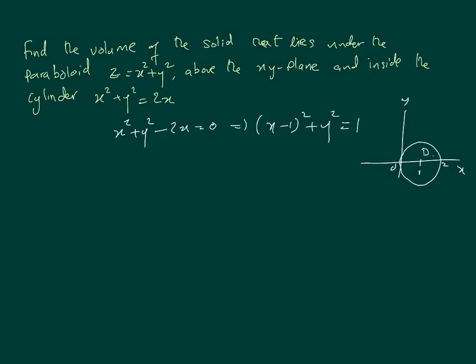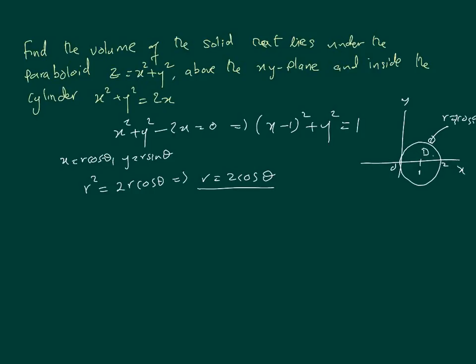To represent this in polar coordinates, we substitute x equals r cosθ and y equals r sinθ. Going back to our original equation x² + y² = 2x, substituting gives r squared equals 2r cosine theta, which implies r equals 2 cosine theta. So that's the boundary of this circle in polar form: r equals 2 cos theta. The radius starts at 0 and goes up to 2 cosθ.